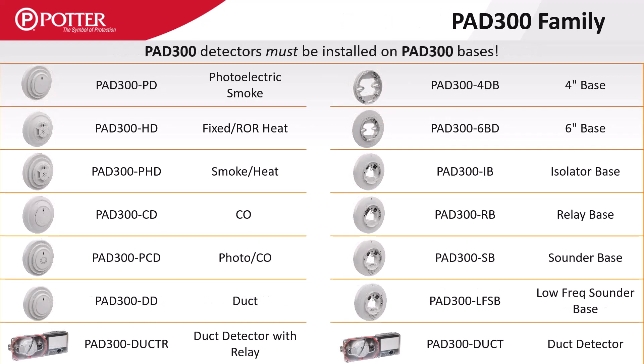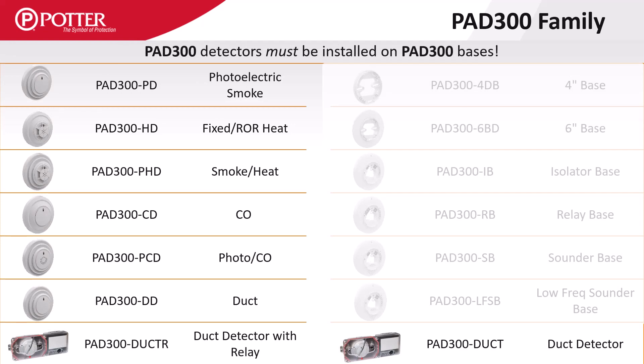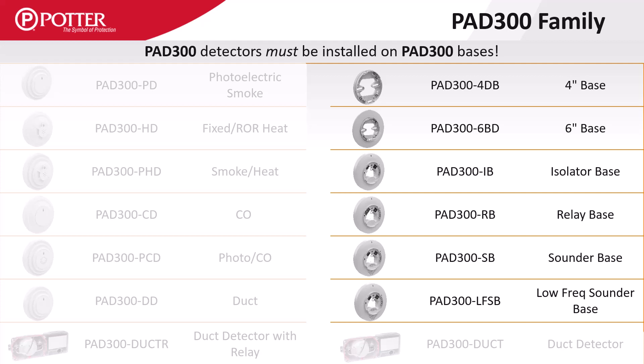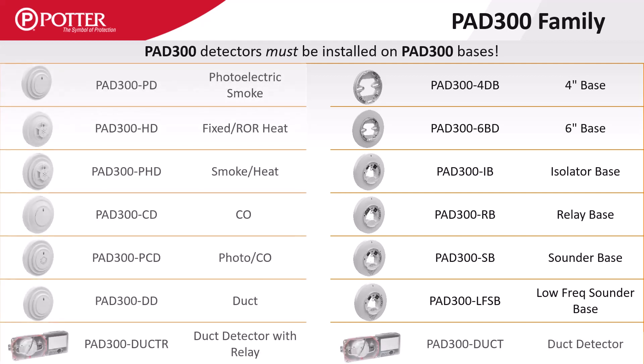300 series detectors need to be paired with a 300 series base. The detectors from this series are on the left and the associated bases on the right. All detectors and bases are purchased separately.